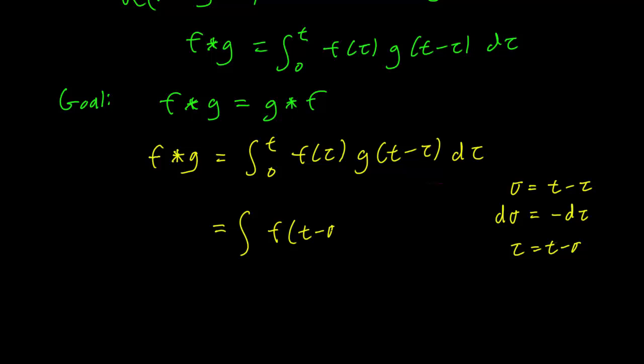So f(t minus sigma) times g(sigma), and d tau is equal to minus d sigma. So we have a minus 1 times d sigma.